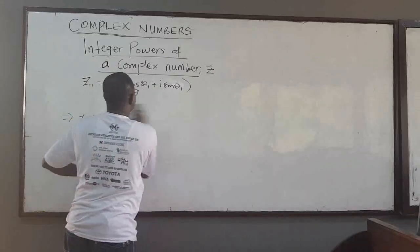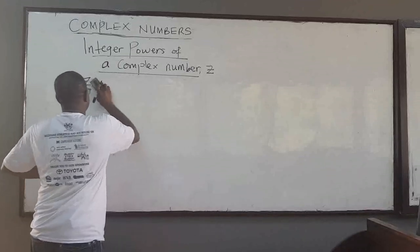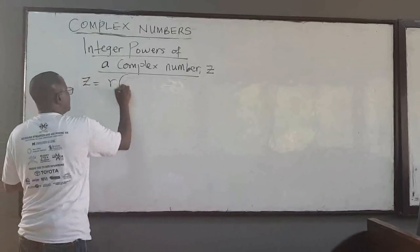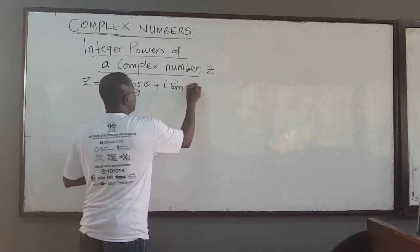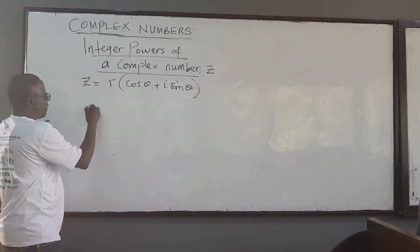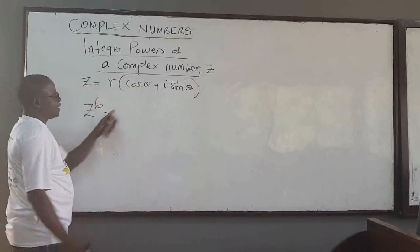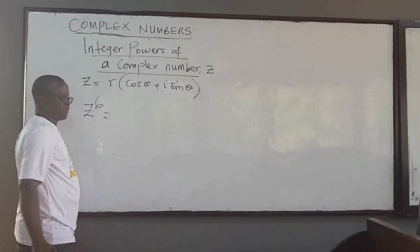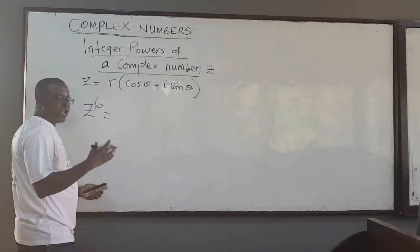If I have the complex number z = r(cos θ + i sin θ) and I raise this to some power — say, to the power 6 — do I need to expand this using binomial expansion in order to get the result? We will show that there is an easy relationship.